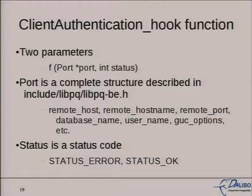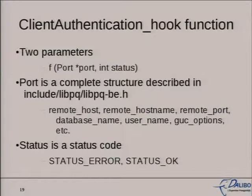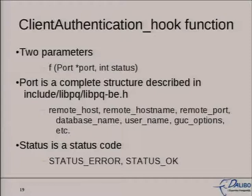The client authentication hook function has two parameters. The first one, port, is a complete structure described in a Postgres header file where you can get the remote host, remote hostname, remote port, database name, username, GSSAPI options, and a few other things. The status integer is a status code which basically says if the connection is accepted or denied.